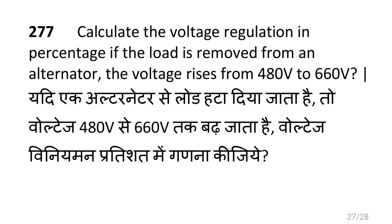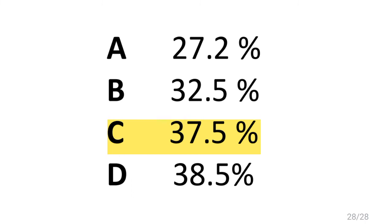Calculate the voltage regulation in percentage. If the load is removed from an alternator, the voltage rises from 480V to 660V, i.e. 37.5%.